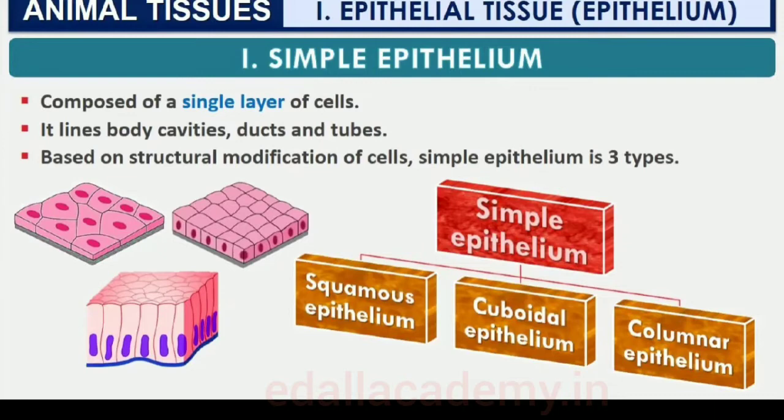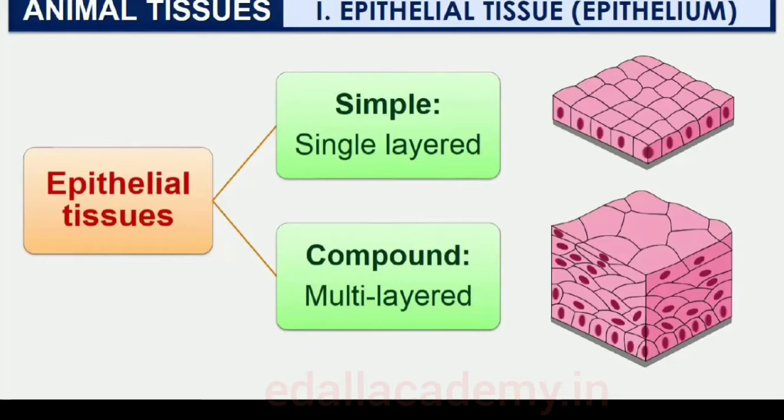There are two types of epithelial tissues: simple epithelium and compound epithelium. Simple epithelium is composed of a single layer of cells and functions as a lining for body cavities, ducts, and tubes. The compound epithelium consists of two or more cell layers and has a protective function, as it does in our skin. On the basis of structural modification of the cells, simple epithelium is further divided into three types.